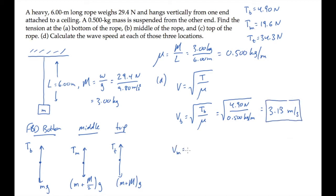At a point at the rope's middle, we find the wave speed is 6.26 meters per second, and the wave speed at the top is 8.28 meters per second. The wave speed increases as you move up the rope, because the tension increases as you move in that direction.